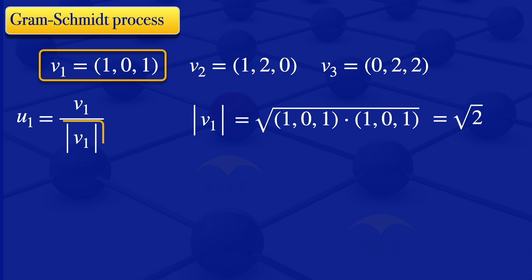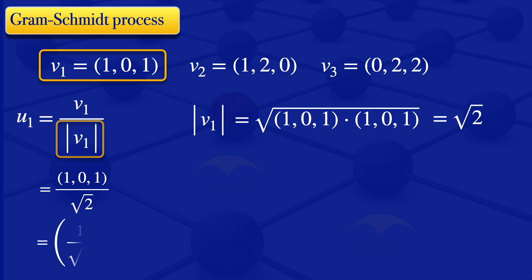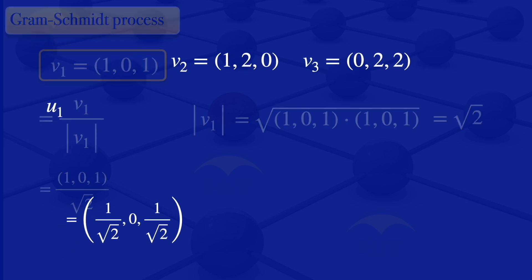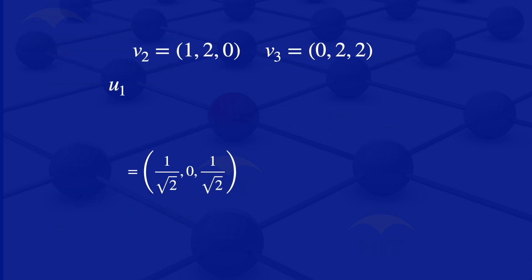The norm of V1 is square root of 2. So our U1 equals the vector 1, 0, 1 divided by square root of 2. Dividing each element by square root of 2, we get 1 over root 2, 0, 1 over root 2. That vector is our U1.